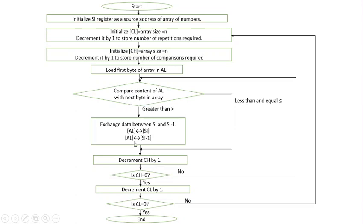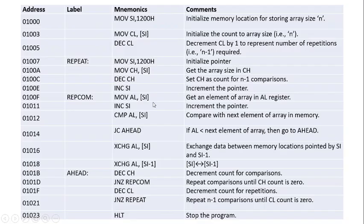After each comparison, we decrement the number of comparisons. If it is non-zero, we go back to the comparison loop. If it reaches zero, that means one full iteration is done, so we decrement CL — the repetitions count — by one. If CL is non-zero, we execute these steps again. If CL is zero, that means all iterations are complete and we stop the program. The data will be sorted in ascending order in the same memory locations.